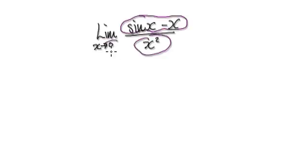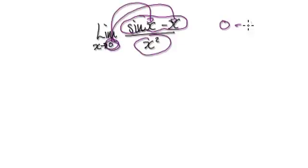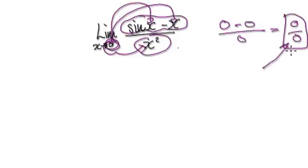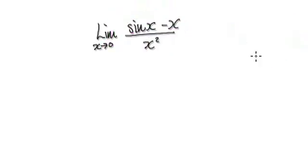As x heads towards 0, put 0 into here — sin of 0 would be 0, put 0 into here, and then put 0 into here. So you have 0 over 0. Now you know that you can apply L'Hôpital's rule. You have to make sure you have got an indeterminate form before you can apply L'Hôpital's rule.